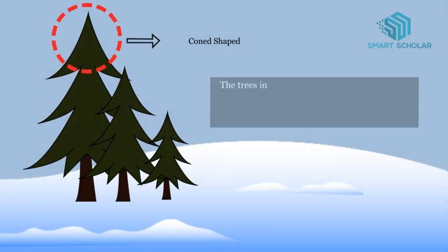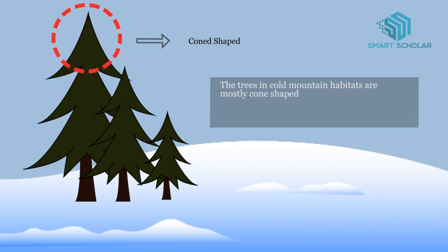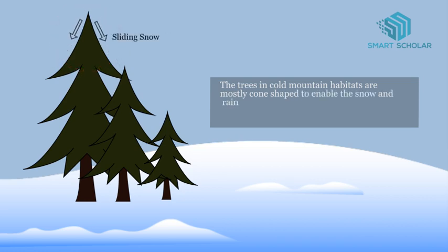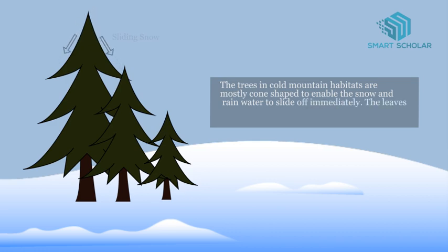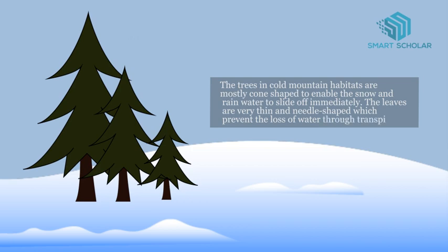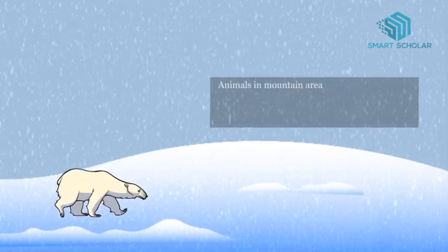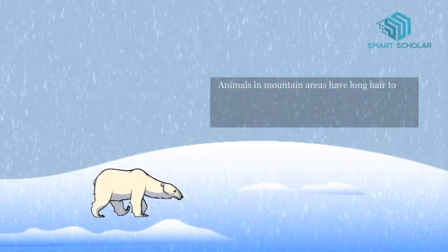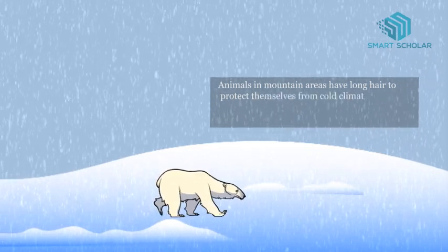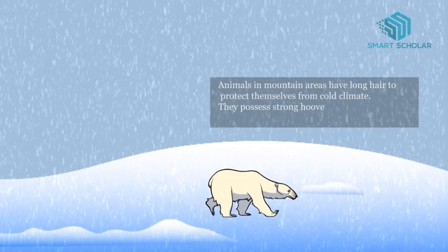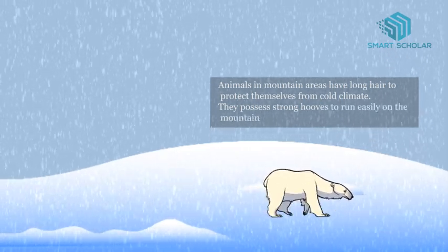The trees in cold mountain habitats are mostly cone-shaped to enable the snow and rain water to slide off immediately. The leaves are very thin and needle-shaped, which prevent the loss of water through transpiration. Animals in mountain areas have long hair to protect themselves from cold climate and possess strong hoofs to run easily on the mountain slopes.